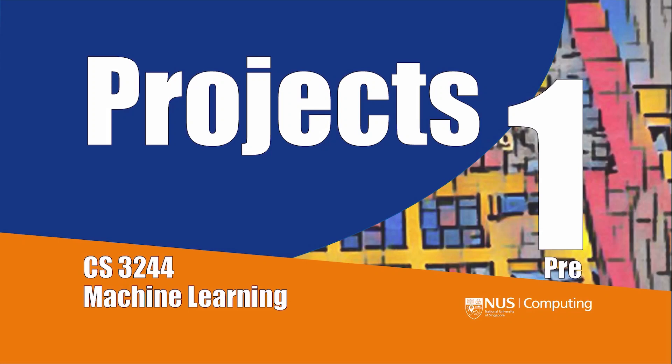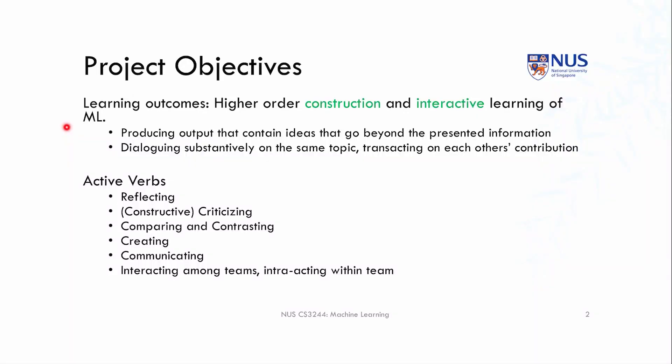Let's take a look at the projects. For our project, which is a major component of the course, we want you to go beyond what we've taught you in the syllabus. Take your interests and find several teammates in this course. Part of the team formation will be up to you, and part will be a stochastic process that matches like-minded people. We want you to produce higher-order learning outcomes through creation, synthesis, and analysis of machine learning algorithms on datasets of your interest, and to dialogue substantially with peers and instruction staff.